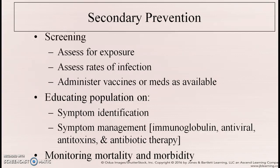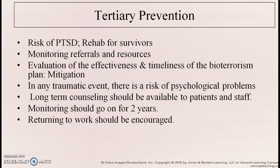Secondary prevention also includes monitoring morbidity and mortality. Tertiary prevention involves watching for risk of post-traumatic stress disorder, rehabilitation for survivors, and mitigation — fixing areas so that the next storm doesn't cause the same damage, like ensuring trees won't fall on wires. Monitoring of people who have been in a disaster should continue for about two years, especially following a radiologic event.